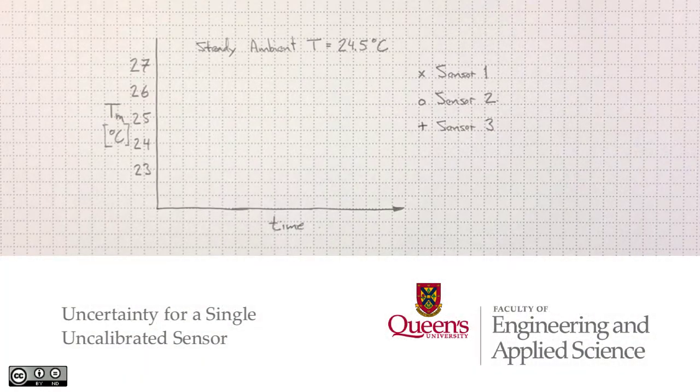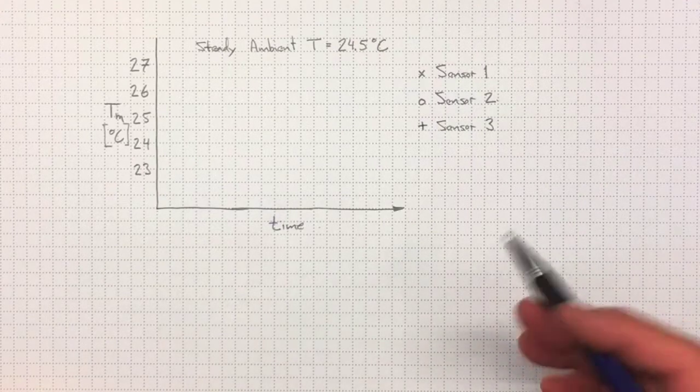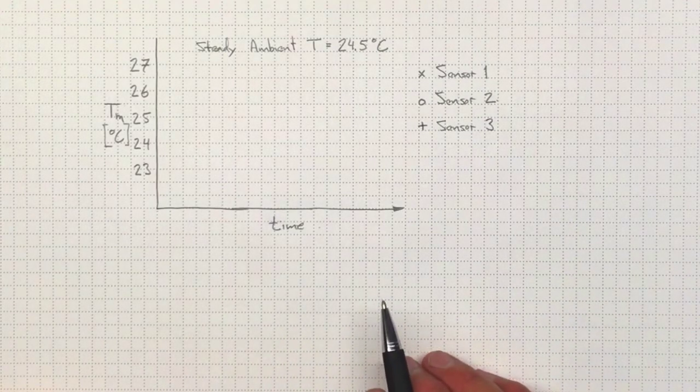When I buy a single sensor like a TMP-36 from a manufacturer and install it, it already comes with a built-in bias. It's got a manufacturing characteristic that leads to it not reading quite exactly right.